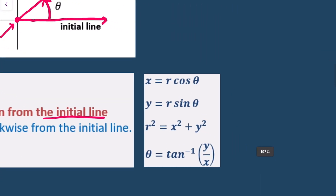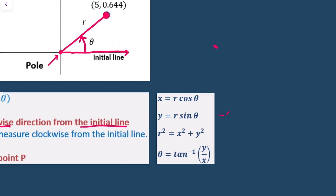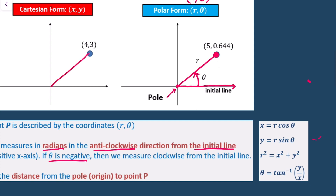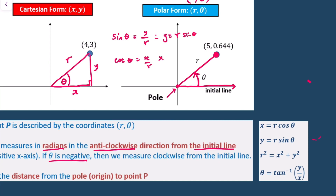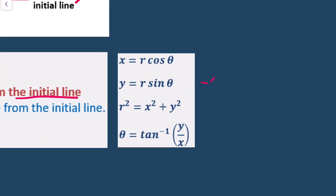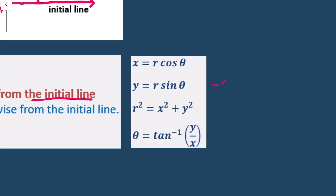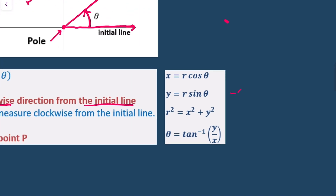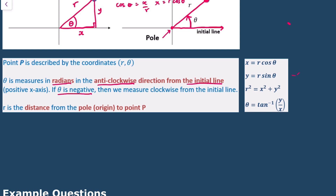If I set up a right-angled triangle with angle theta, then sin theta equals y over r, cos theta equals x over r. Therefore, the y-coordinate is r sin theta, the x-coordinate is r cos theta, r squared equals x squared plus y squared by Pythagoras' theorem, and we can find theta by taking arctan of y over x. All of that should hopefully be familiar.